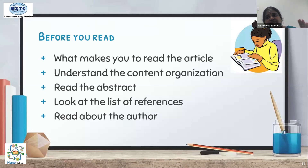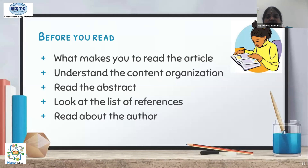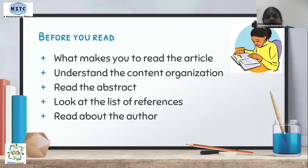Reading and understanding the abstract clearly is very important — it makes it easier to read the rest of the article. After the abstract, go to the list of references and check for authenticity — whether the article is based on the latest reviews and whether good-quality references are included. Then read about the author's credibility, experience in research, and publications. Many journals now accept articles only if the author has an ORCID ID or profile on Google Scholar. These steps create the initial impression of the article before you proceed to the critical review.